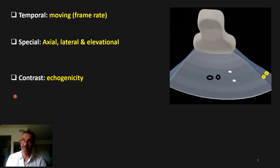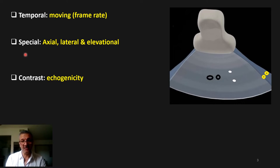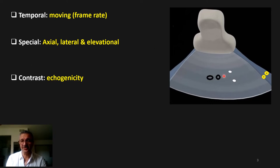I will talk about temporal and contrast resolution in separate presentations. Today I'm going to focus on spatial resolution. Spatial comes from 'space,' and we have three dimensions in any tissue: thickness, height, and width — giving us axial resolution, lateral resolution, and elevational resolution.